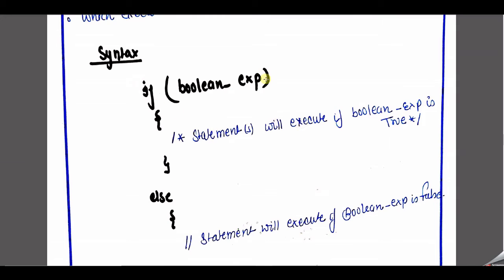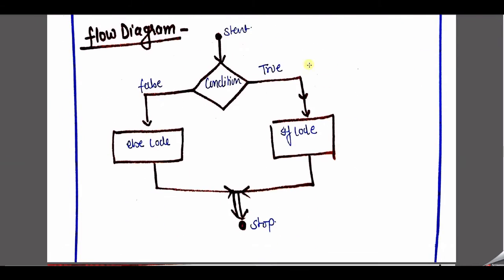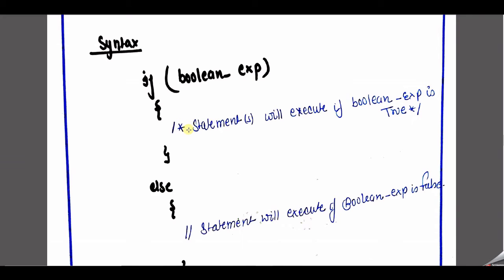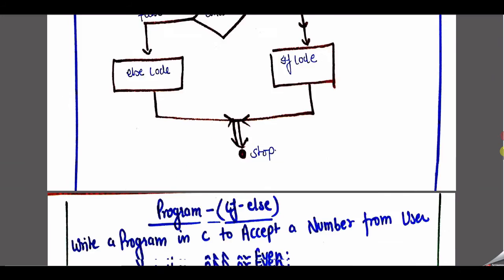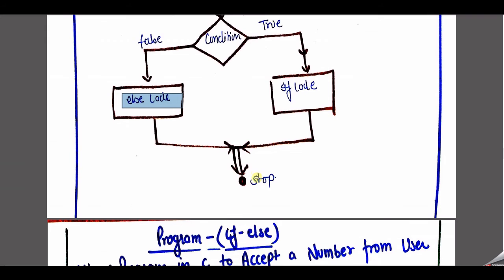This is the syntax: if our condition is true, the statements inside the if block will be executed — only if the expression is true. Else, the statements will be executed when the boolean expression is false. What is the flowchart? Start, then condition — if condition is true, we go through the if code, whatever we've written in the first scope area. If the condition is false, then we go through the else code, the else scope area. And then go through the rest of the program and then stop.